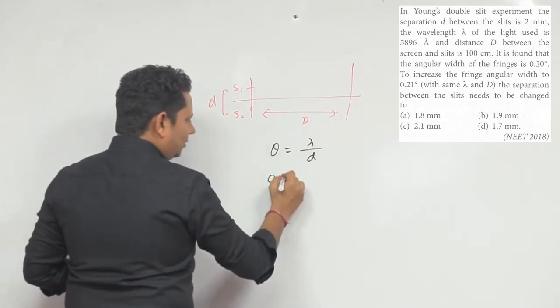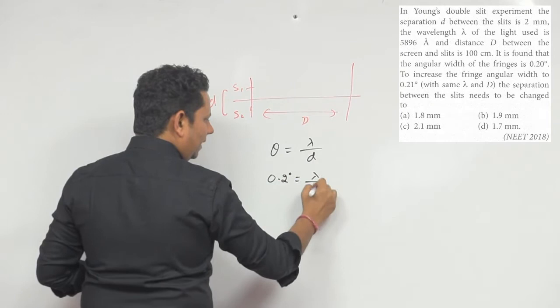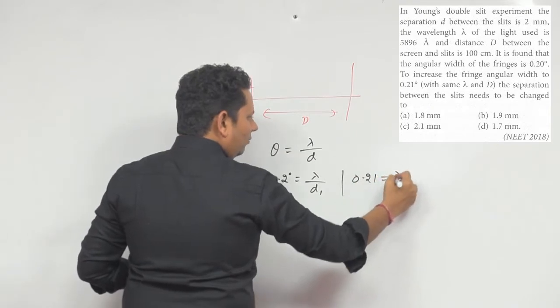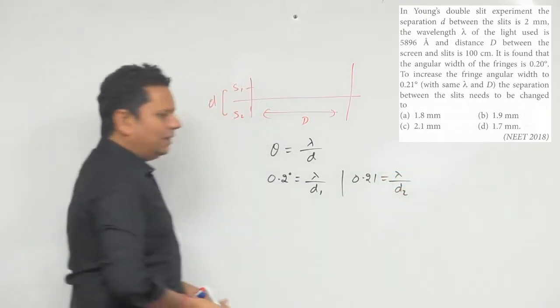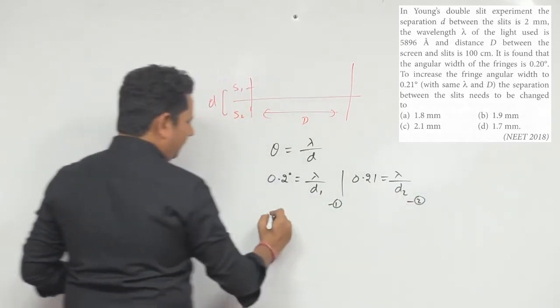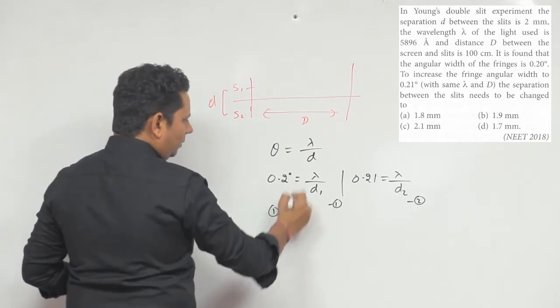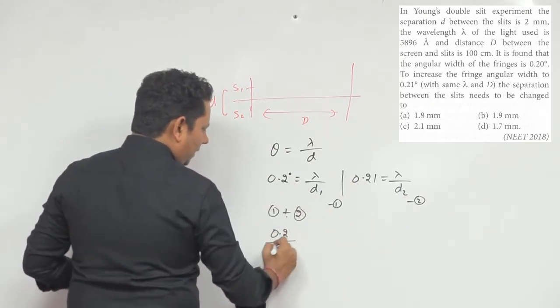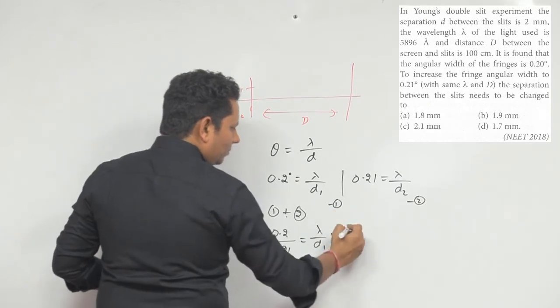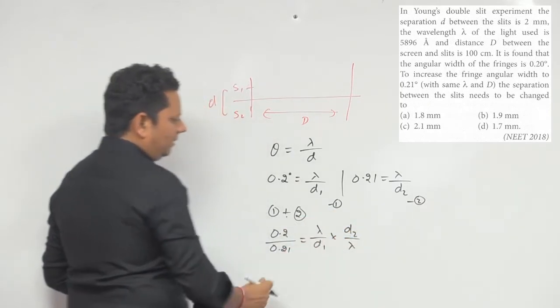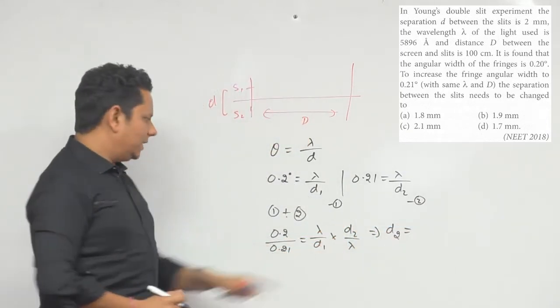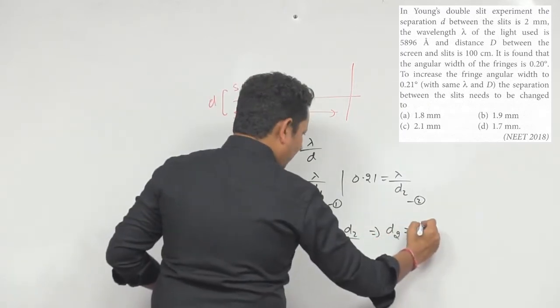Angular width equals lambda divided by d1. Similarly, it will be equal to lambda divided by d2.